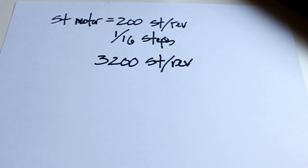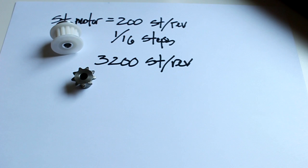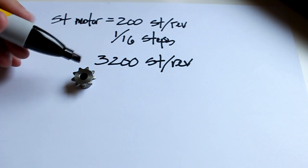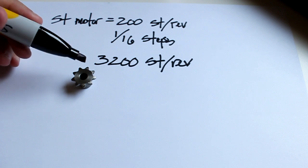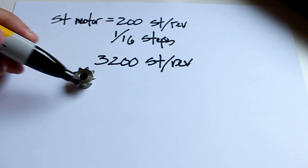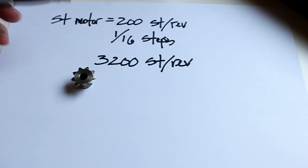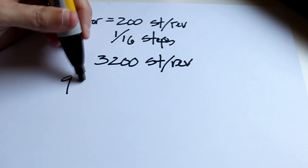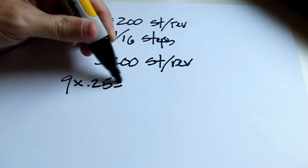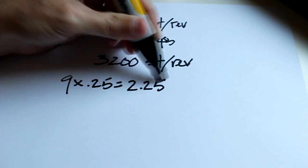Now we'll have to consider the mechanics that we'll be using. It can be a timing pulley, a drive sprocket, and I'll use the drive sprocket as an example. I know that the pitch is a quarter inch and I have 1, 2, 3, 4, 5, 6, 7, 8, 9 teeth. So I can take 9 and multiply that by 0.25 and I'll get 2.25 inches.